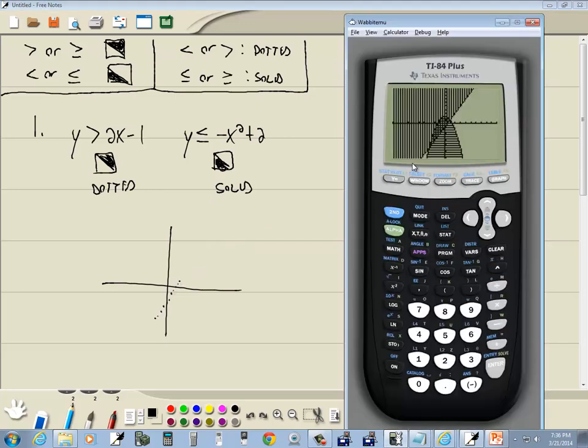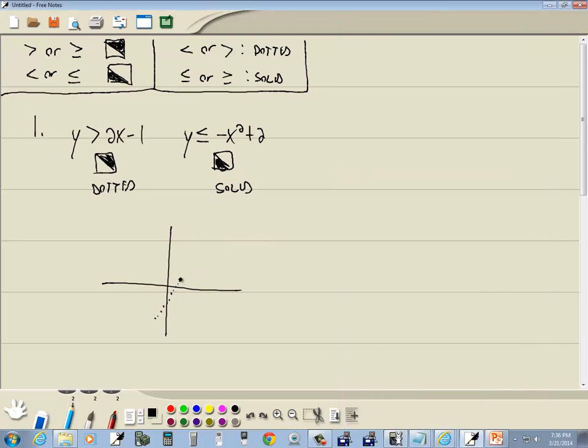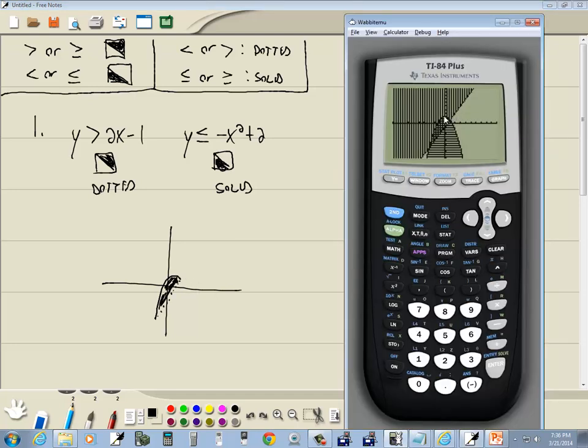Like that. And then the other one we said was solid, like that. And then we shade what's in between. Again, only the shaded region is our answer. And that's our answer.